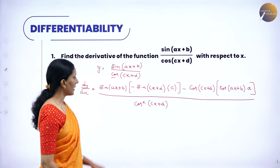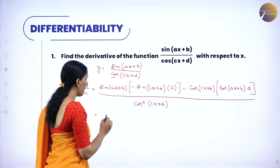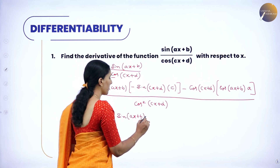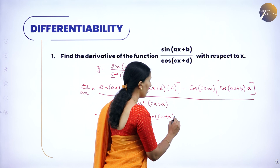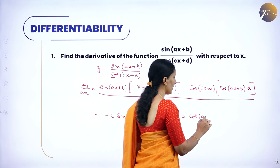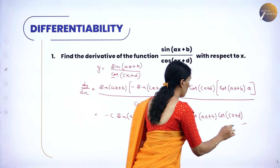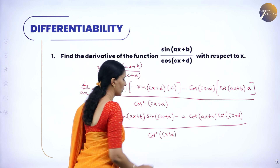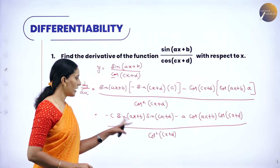So now this gives: minus c·sin(ax plus b)·sin(cx plus d), minus a·cos(ax plus b)·cos(cx plus d), all divided by cos squared (cx plus d). So this is the derivative of the given function. If you want, you can take minus outside and keep both terms positive.